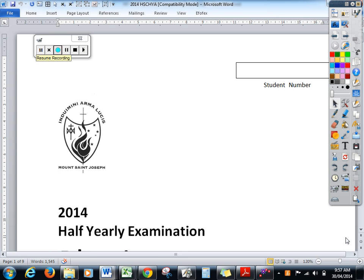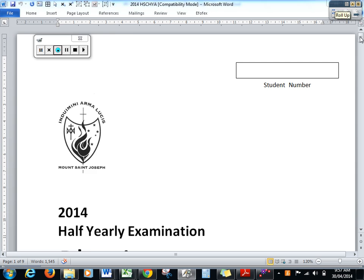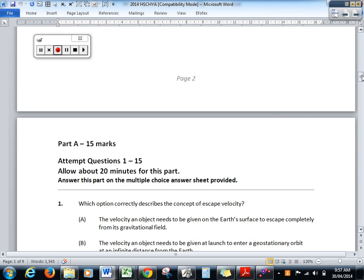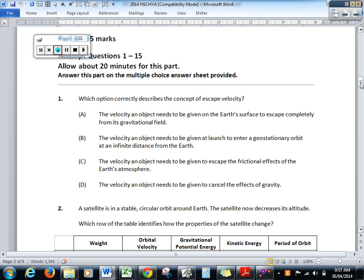Okay, we're going to have a look now at our feedback of going through the half yearly and looking at the multiple choice first. So let's go through the multiple choice. Now we've got to be very careful of physics word salad. Word salad is a lot of physics jargon. Sounds great, but it's total rubbish. You put enough words together, you can impress the uninformed, but at the same time you can just be saying nothing. So which option correctly describes the concept of escape velocity?